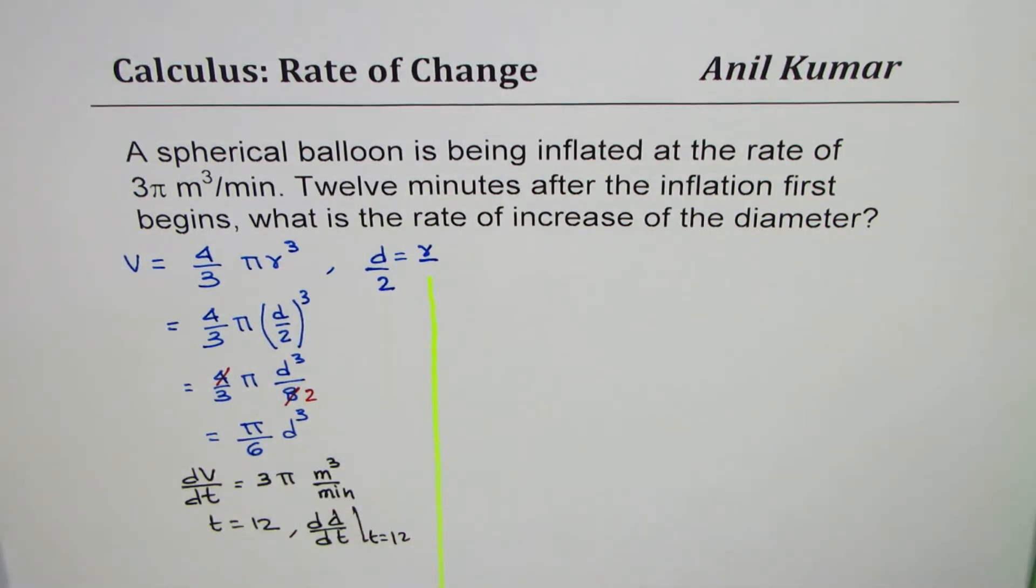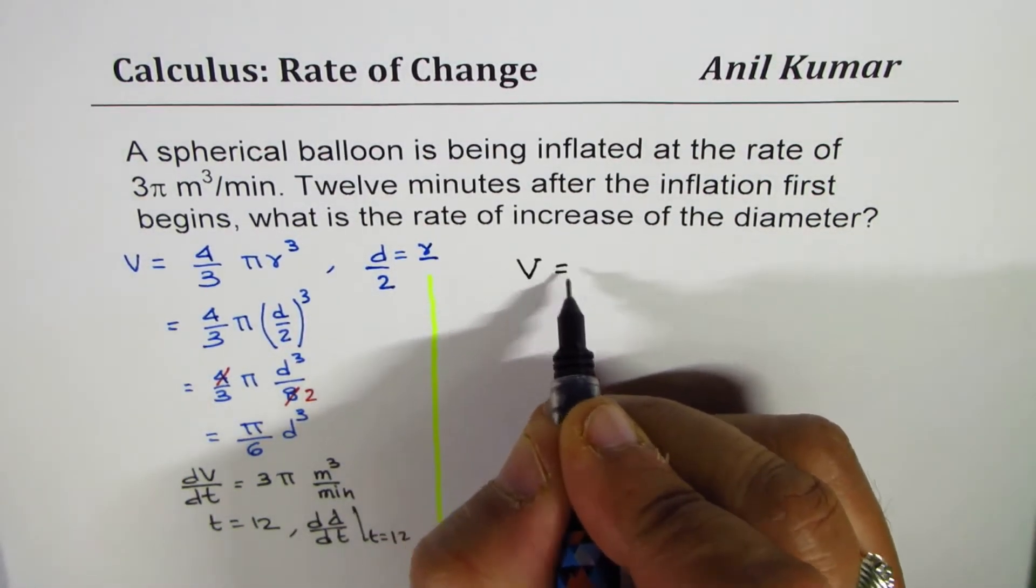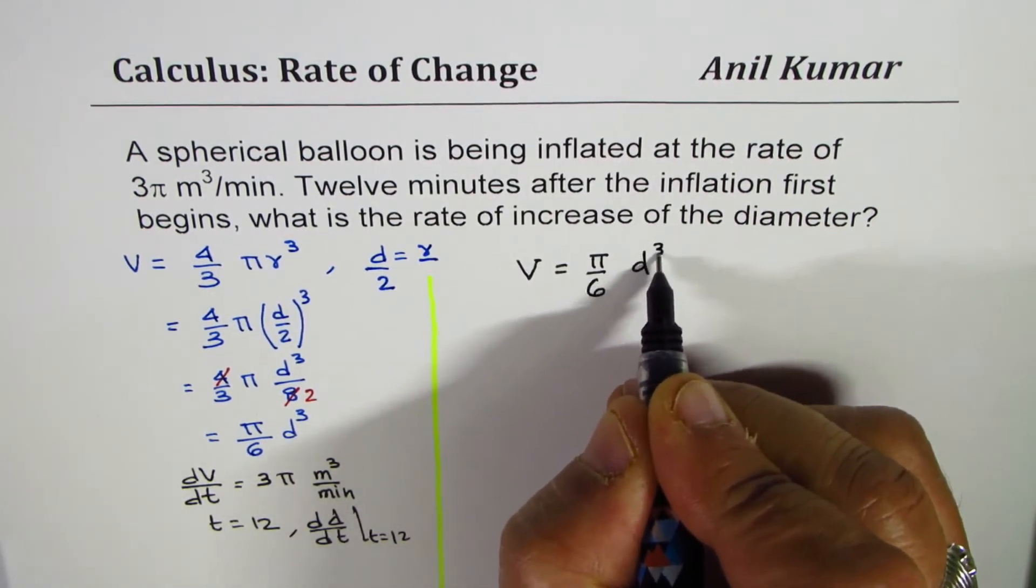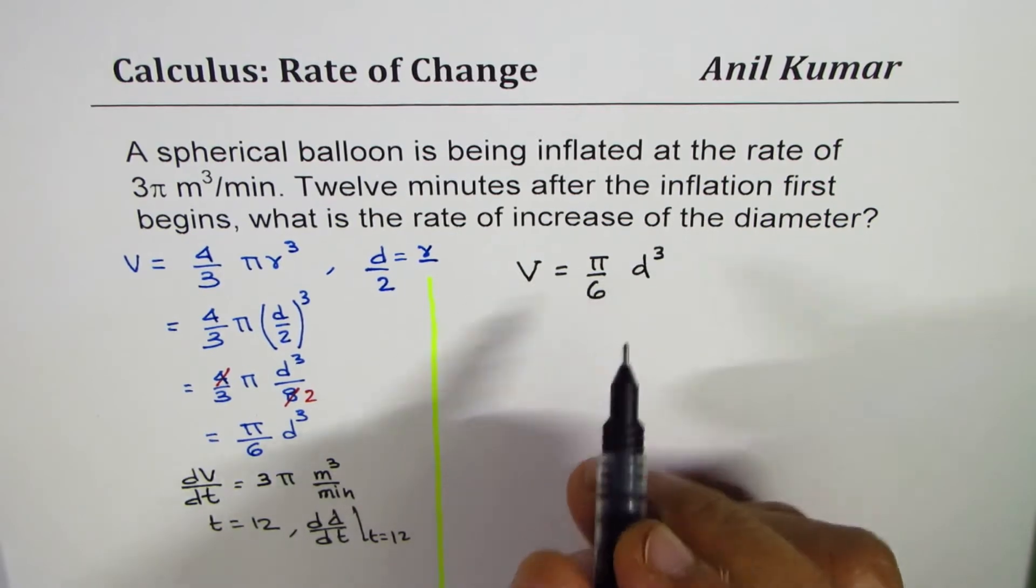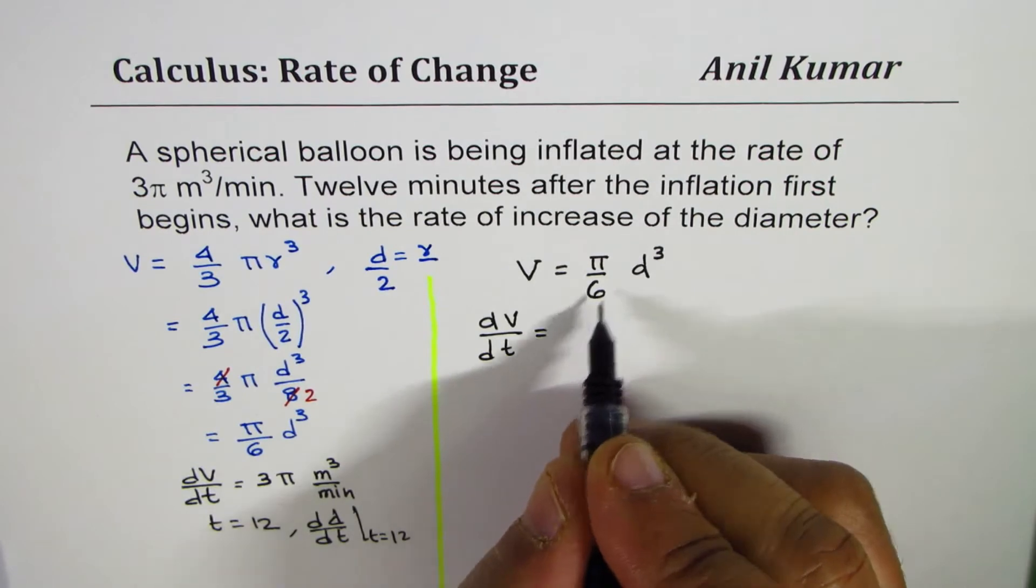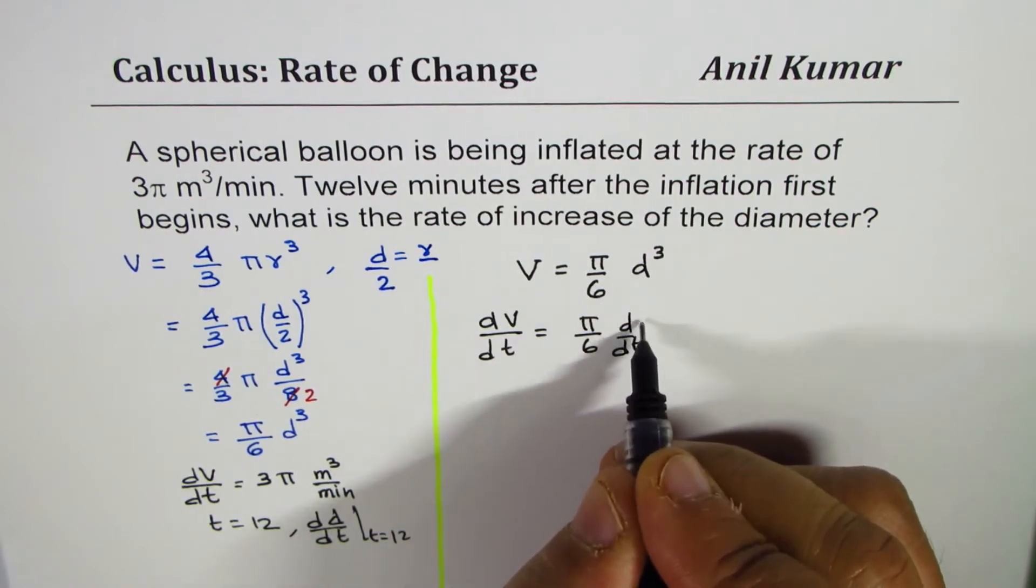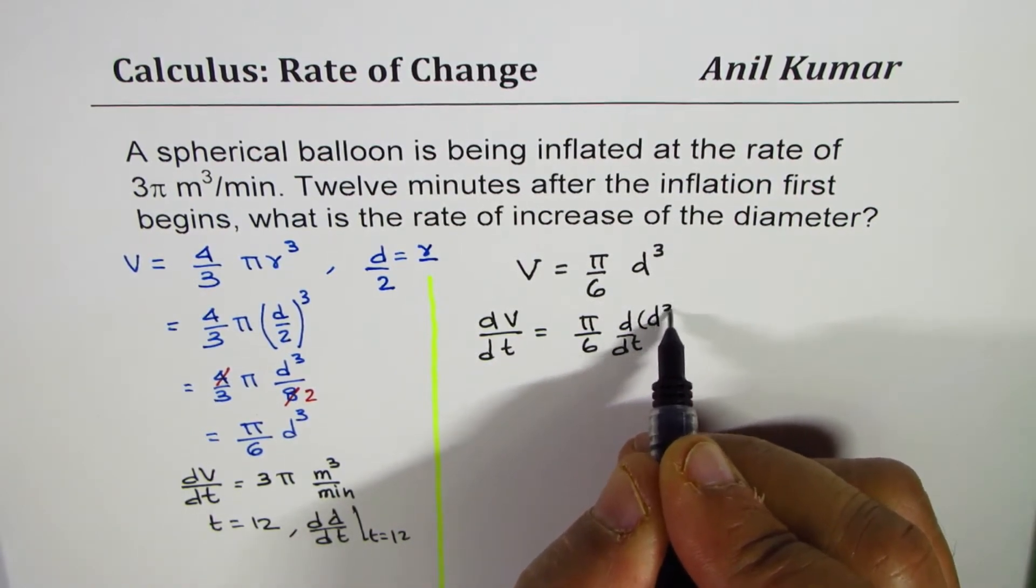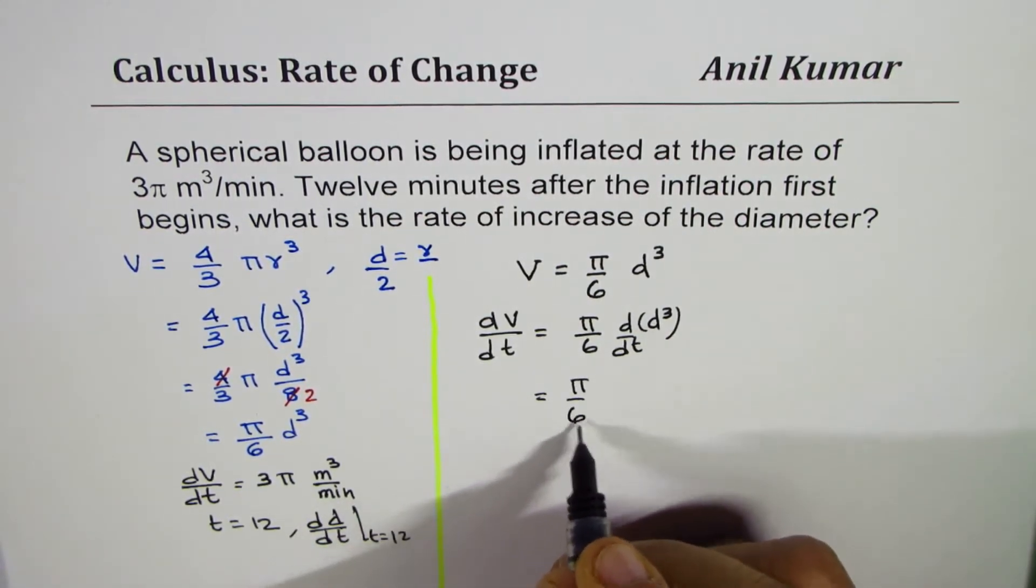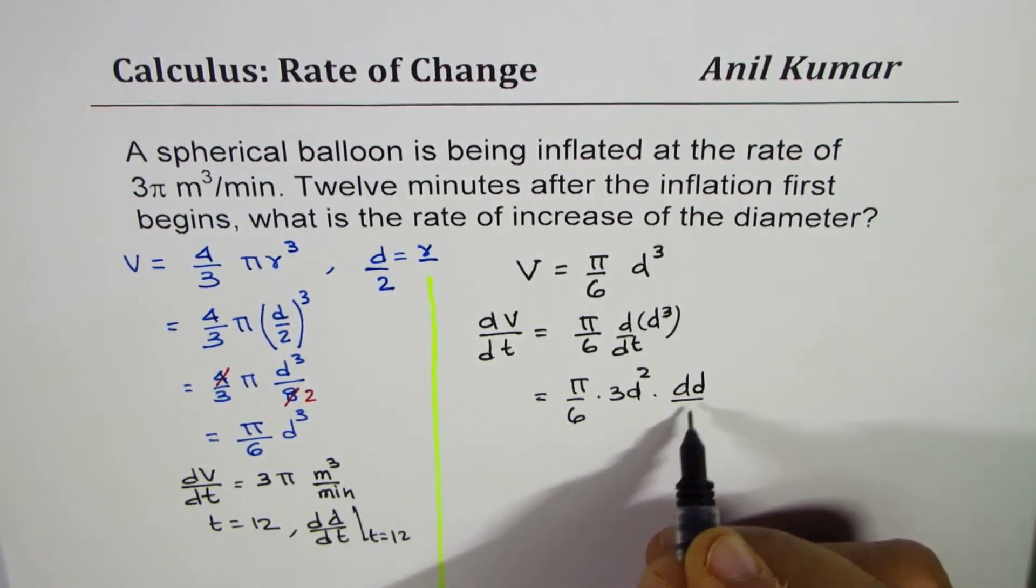Now we can work on this question. We'll begin with the formula which we just derived, so V = π/6 d³. Differentiate both sides with respect to time, so we get dV/dt equals π/6 d/dt of d³. That gives you π/6 · 3d² · dd/dt.